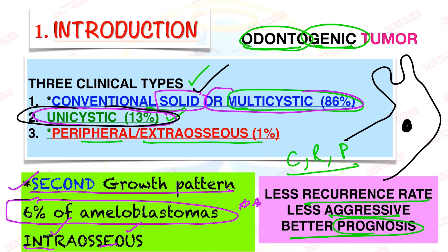Unicystic Ameloblastoma was first described by Robinson and Martinez in the year 1977.